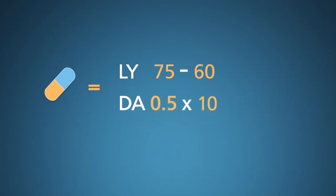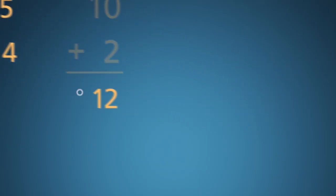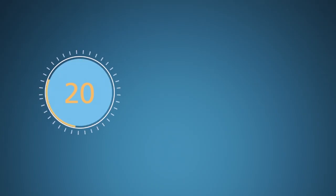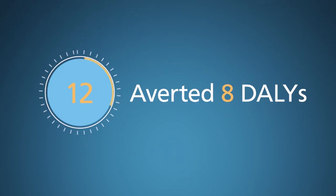What if a diabetes care intervention extended life by 5 years and reduced the duration of disability from 10 years to 4? Then the life years lost would be 10 instead of 15, and the disability adjustment would be 2 instead of 5. Added up, that yields 12 DALYs instead of 20. This means, using the standard terminology, we've averted 8 DALYs through this intervention. That is the health benefit of the intervention.